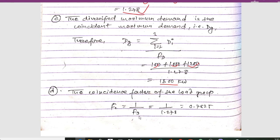The coincidence factor for the load group is Fc equals 1 upon Fd. Using the value of Fd as 1.278, we get the coincidence factor Fc equals 0.7825.